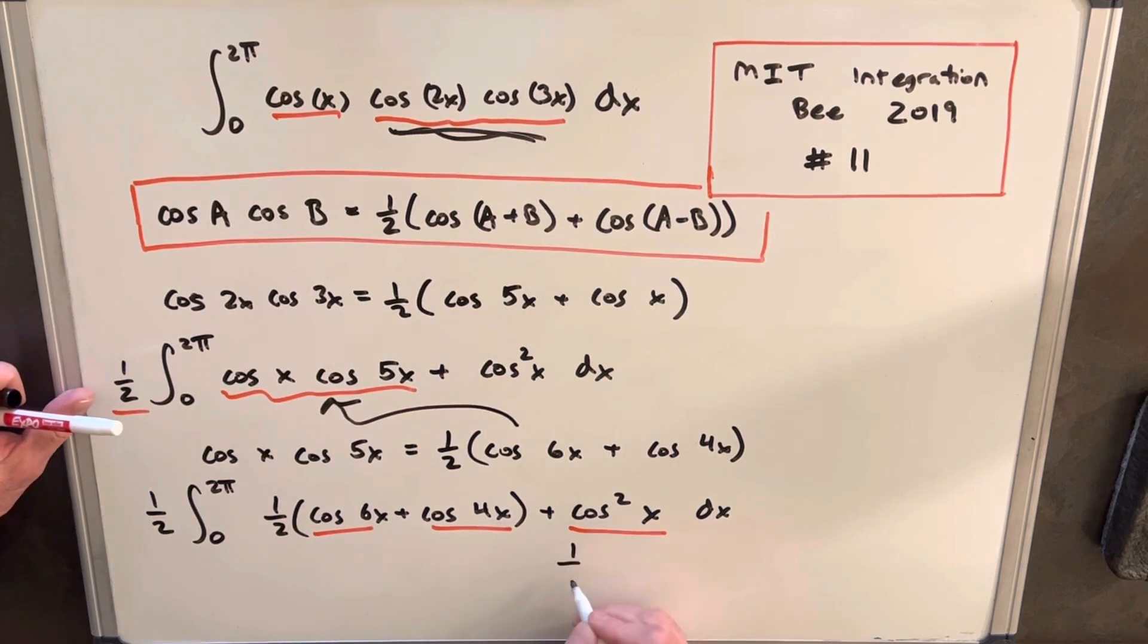We know this is actually the same as a half plus a half cosine 2x. So we can actually plug that in here, and then let's just rewrite this whole thing and clean it up a little bit before we're ready to integrate.